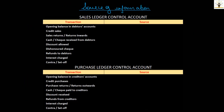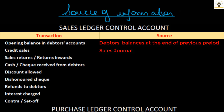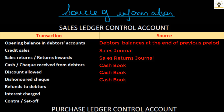Having understood that control accounts are prepared using information from the books of prime entries, let us see the exact source for each item in the sales ledger control account. The opening balance can be taken from the total of debtors balances at the end of the previous period. Credit sales can be taken from the total of the sales journal. Sales returns or return inwards will be taken from the total of the sales returns journal. Cash or cheques received from customers, discount allowed, cheques dishonoured, and refunds to debtors will all be taken from the cash book — noting there is a discount allowed column in the cash book. Interest charged to debtors and contra or set-off details will be available from the journal.